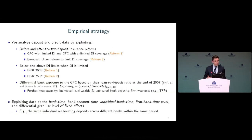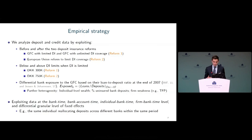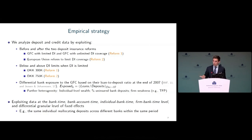Our empirical strategy leverages variation across different dimensions. First, the time dimension — what happens before and after these deposit insurance reforms. Second, variation in the size of deposit accounts, allowing us to look at deposits just above and just below the insurance limits, which helps substantially with identification. Third, variation across banks exploiting differences in the loan-to-deposit ratio as a proxy for banks' exposure to the global financial crisis.